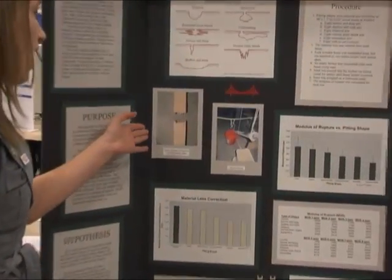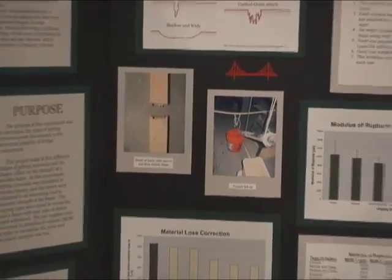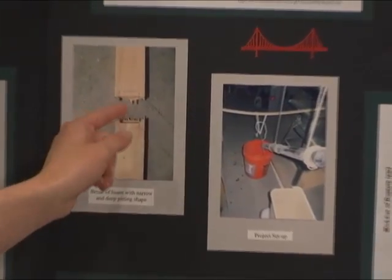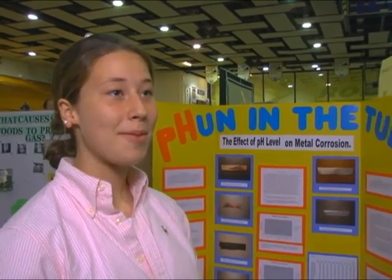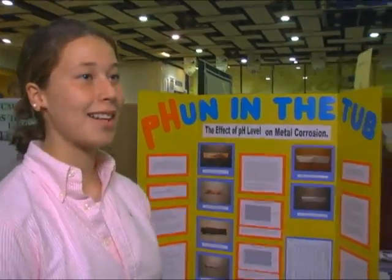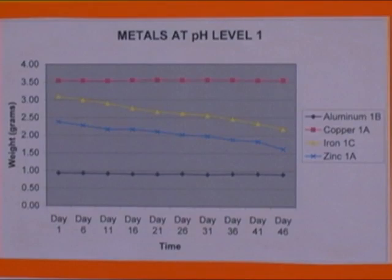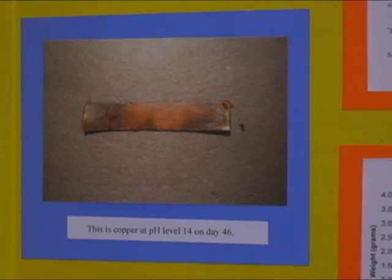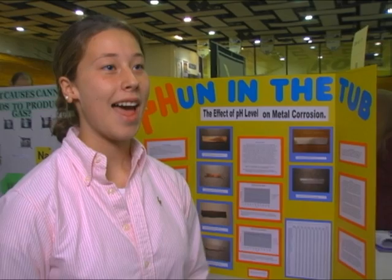I saw the Minnesota bridge collapse, and I wanted to know why this horrific event would happen. My hypothesis was that narrow and deep pitting shapes would cause a greater reduction in beam strength than shallow and wide pitting shapes. My project was Fun in the Tub — the effect of pH level on metal corrosion — and I came up with it because I have a hot tub and we have to maintain a certain pH level. So I thought, what would happen if you did not maintain the pH level? At what pH level would it corrode the most?